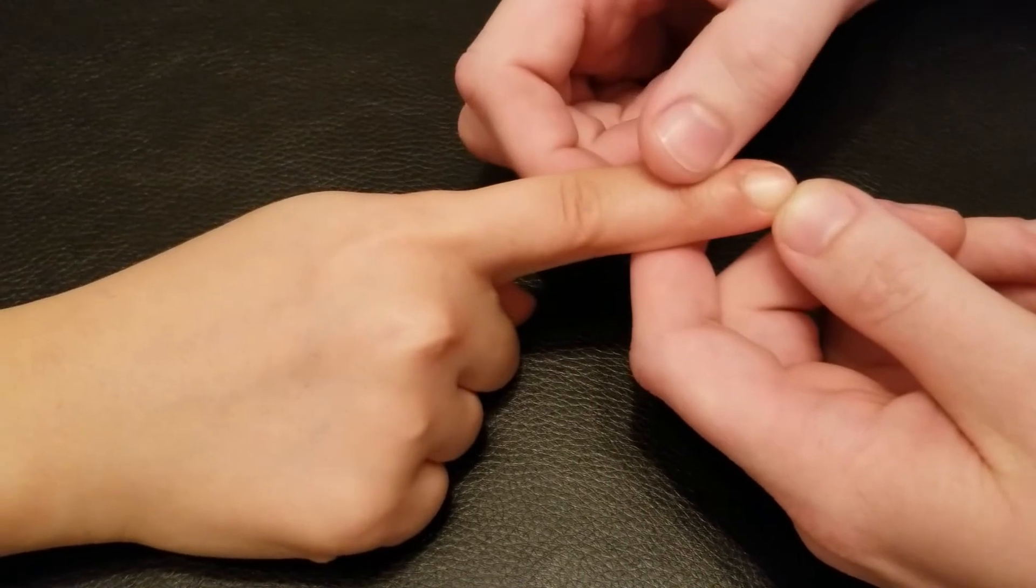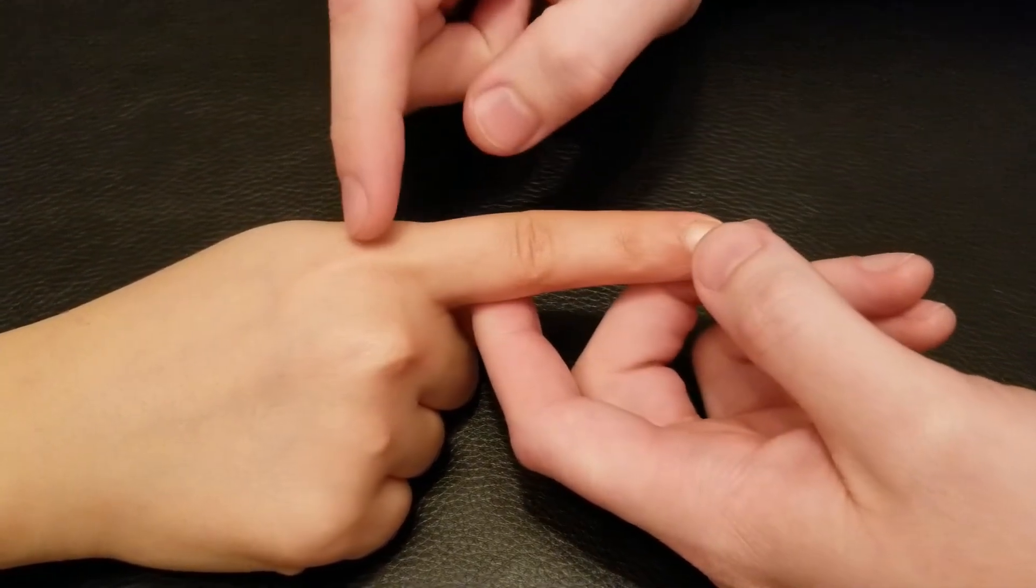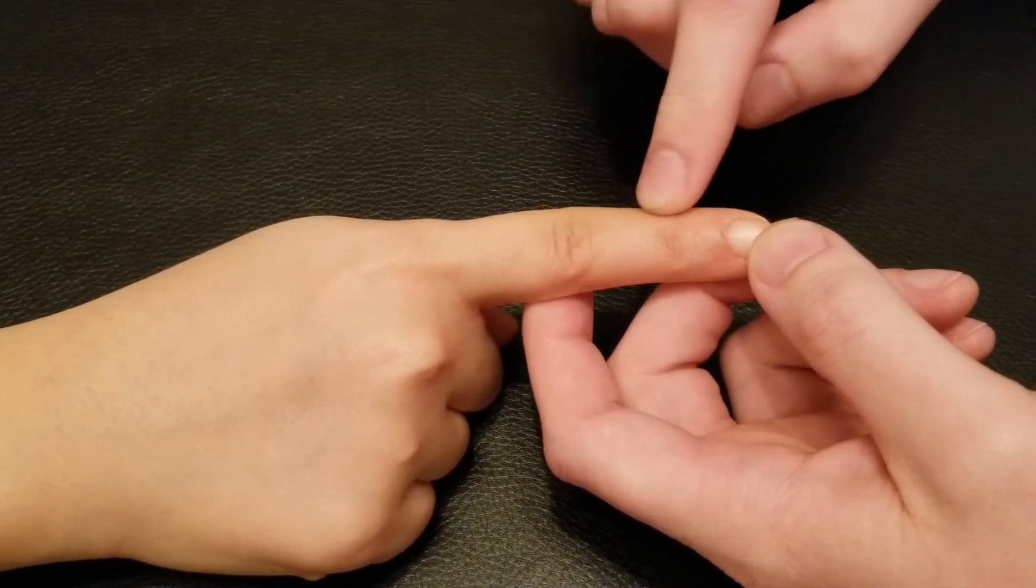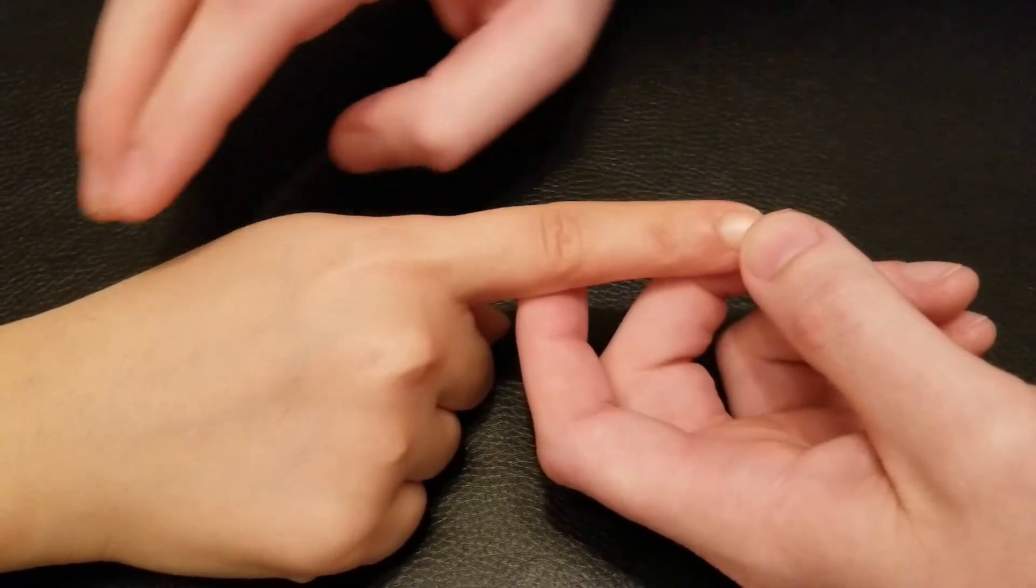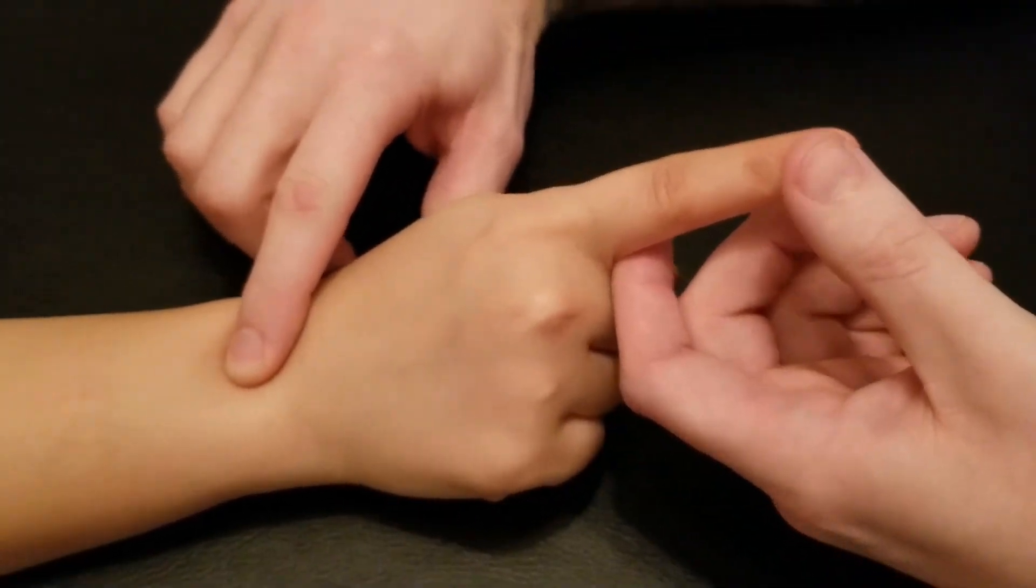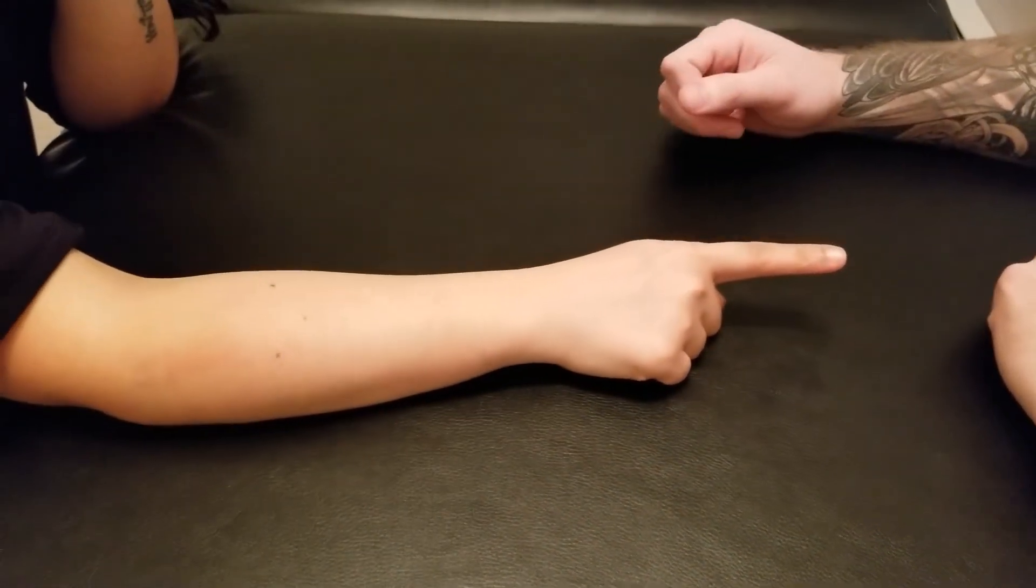That is via what we call the dorsal digital expansion. It is doing extension of the metacarpophalangeal joint, the proximal and then distal interphalangeal joints, plus it has some weak extension at our wrist joint. As per all the muscles on the extensor surface, they are all innervated by the radial nerve.